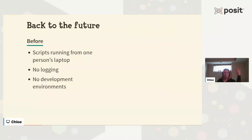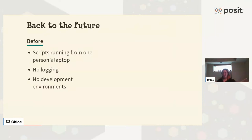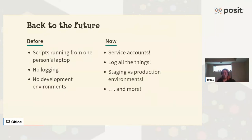So going back to the past — before, we had scripts running from one person's laptop. It works, but there are lots of ways it can fail. What if this person is sick? What if they go on vacation? Most of the laptops we use are Windows laptops — what if we get that Windows update? We had no logging, no development environments. Now, things are much better. We have service accounts, which removes the reliance on one person. We log all the things. We have staging versus production environments and so much more.